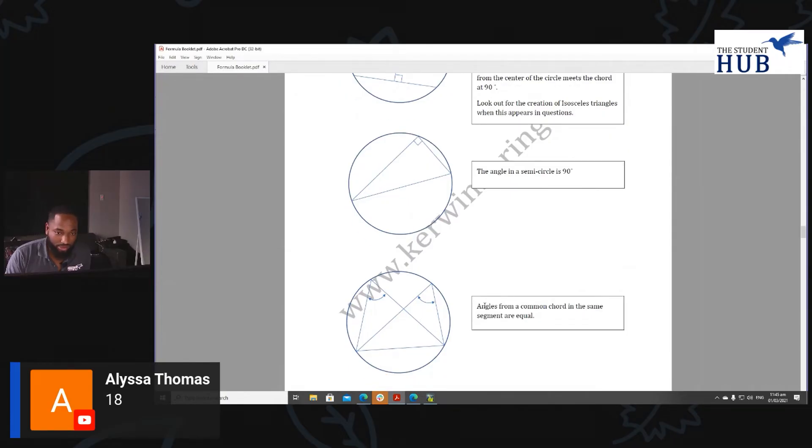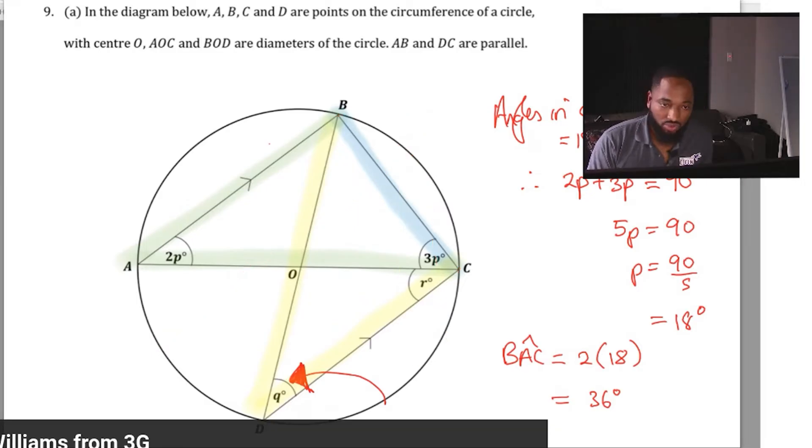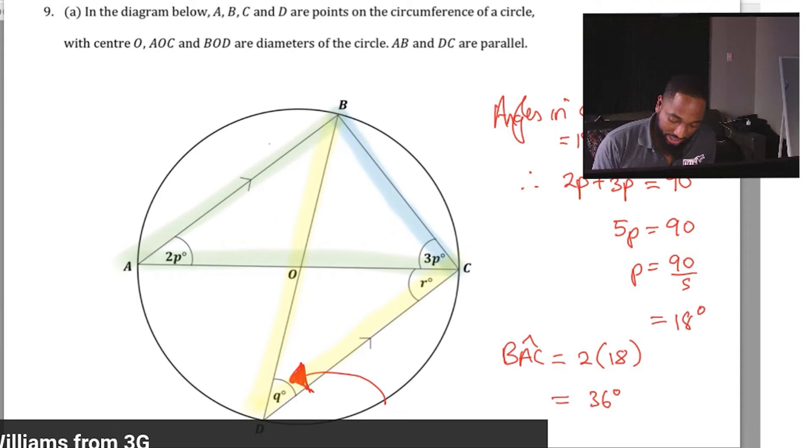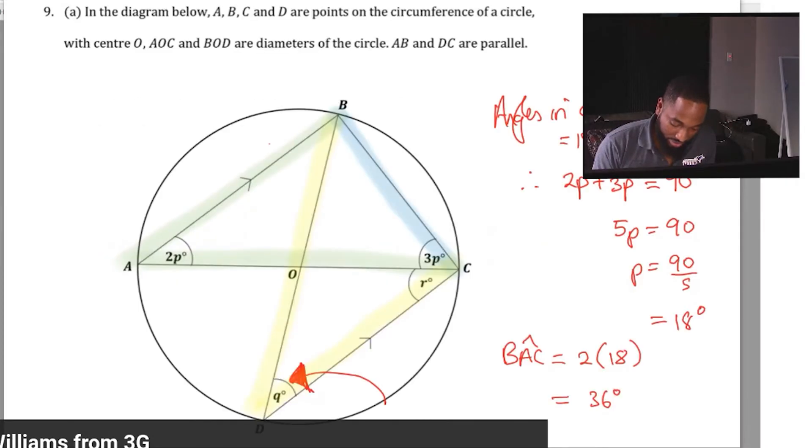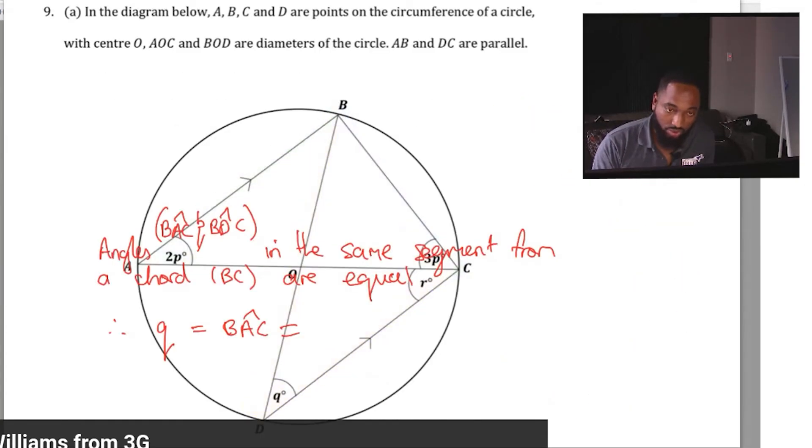Do you know that there's a rule for that? We call this one the bunny ears rule because it looks like bunny ears. Angles from a common chord in the same segment are equal. The largest chord is a diameter, but this is a chord. So we're just going to write that angles in the same segment from a common chord—the angles BAC and BDC—in the same segment from the common chord BC are equal. Therefore, q, which is angle BDC, is also equal to what we just found out here: 36 degrees.